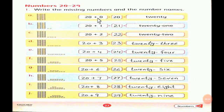20 plus 0 equals 20, write the spelling of 20. 20 plus 1 equals 21, write the spelling of 21. 20 plus 2 equals 22, we have to write the spelling of 22 also. 20 plus 3 equals 23, we have to write the spelling also. 20 plus 4 equals 24, write the spelling. 20 plus 5 equals 25, write the spelling. 20 plus 6 equals 26, write the spelling.